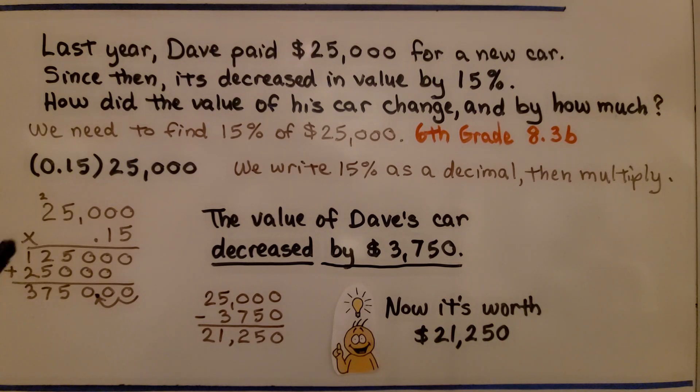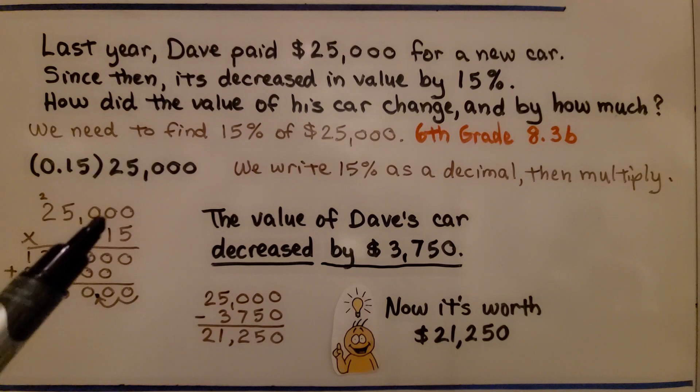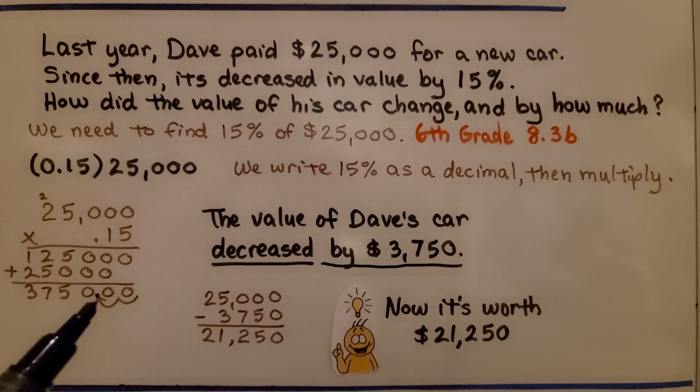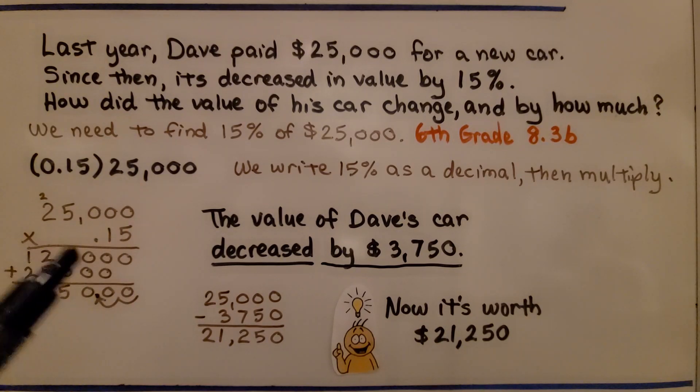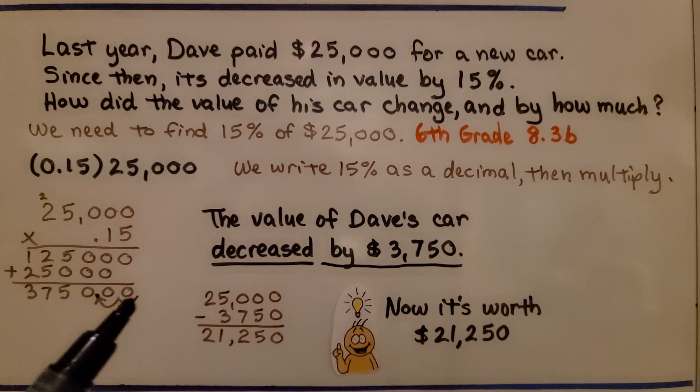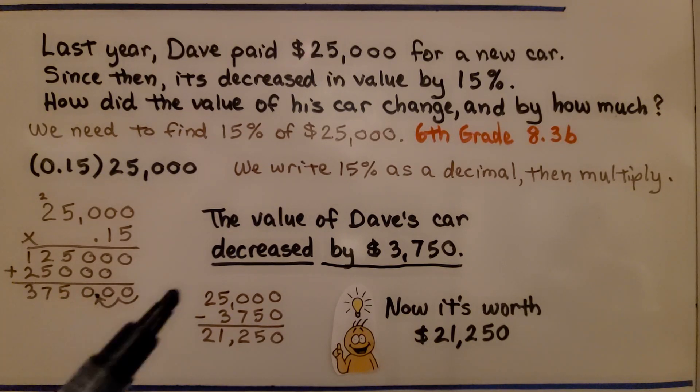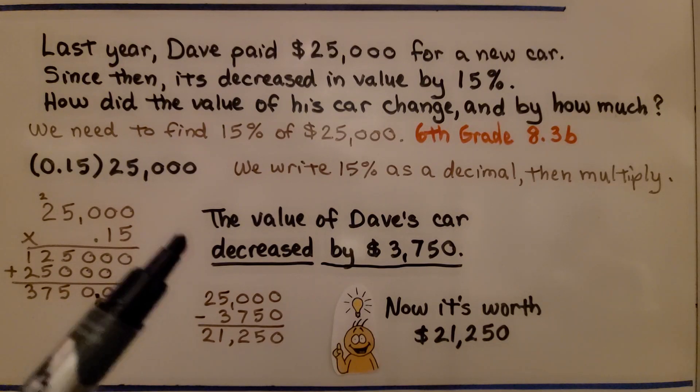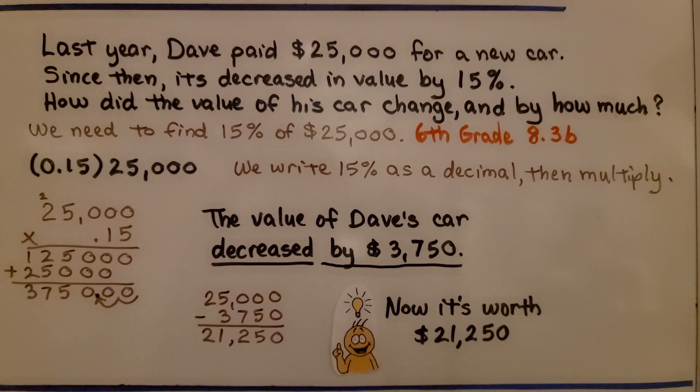We multiply it by 25,000. And, remember, when you multiply with decimals, however many decimal hops are in the problem is how many are going to be in the product. So, once we did our multiplication and our addition here, we had 1, 2 hops. So, we're going to go 1, 2 hops. We've got 3,750. So, the value of Dave's car decreased by $3,750. That's 15% of the 25,000.